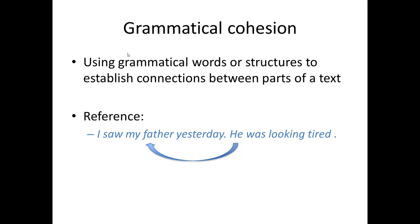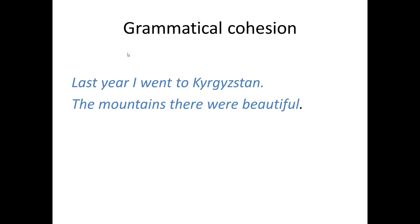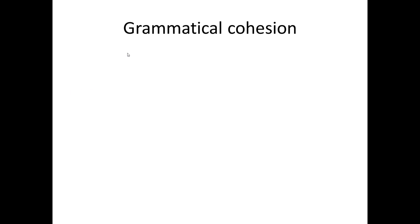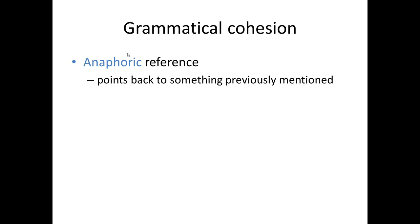There are many other words that work in the same way. For example: 'Last year I went to Kyrgyzstan. The mountains there were beautiful.' 'There' refers to a place, but out of context you wouldn't know which place — it's only the context that tells you. The examples we've just looked at involve words which refer back to something in the previous linguistic context. This is called anaphoric reference — the words 'he' and 'there' point back to something that's been mentioned earlier.